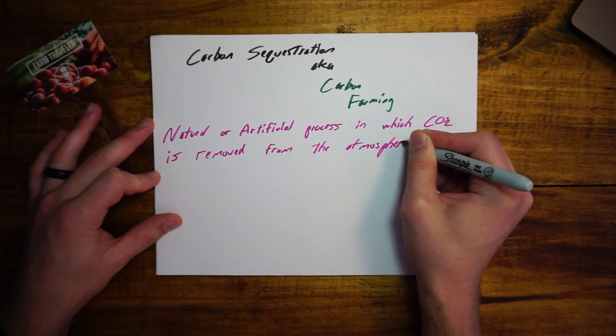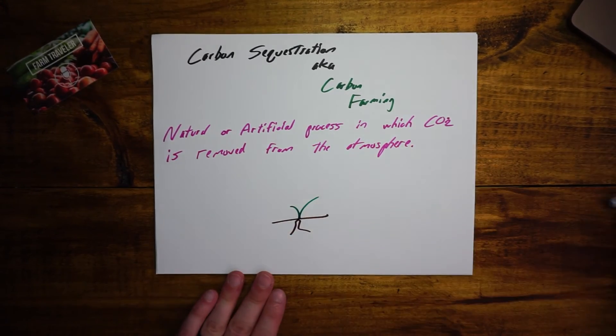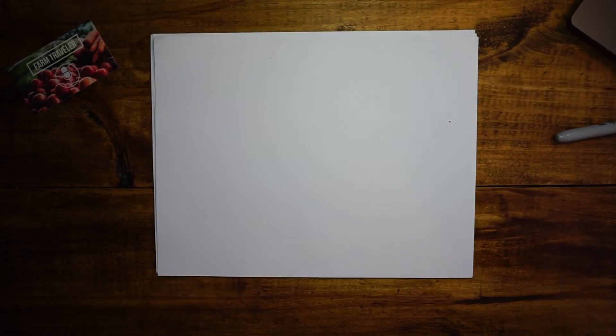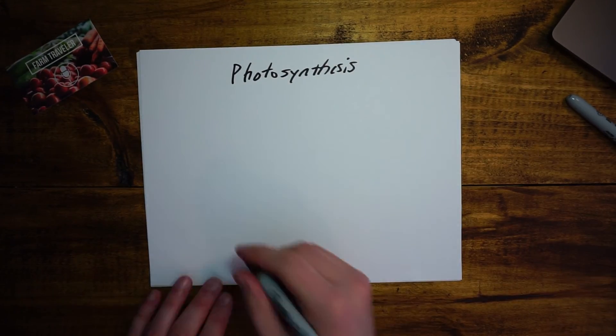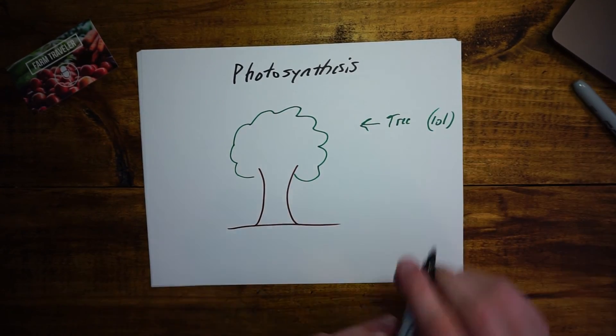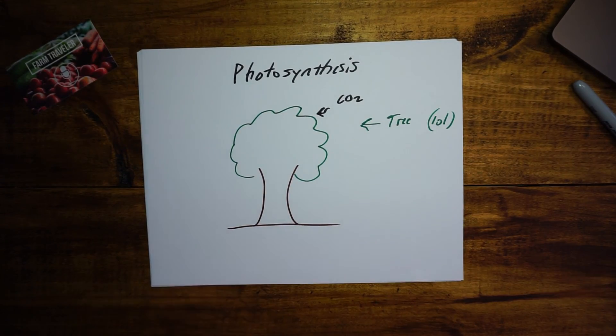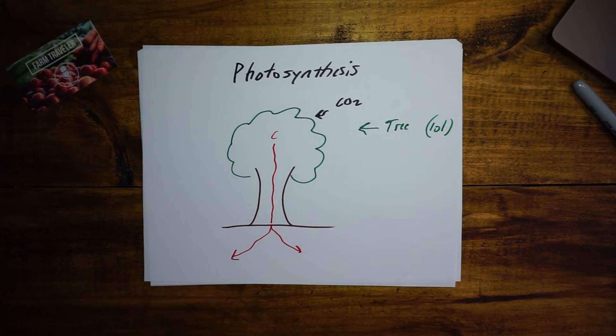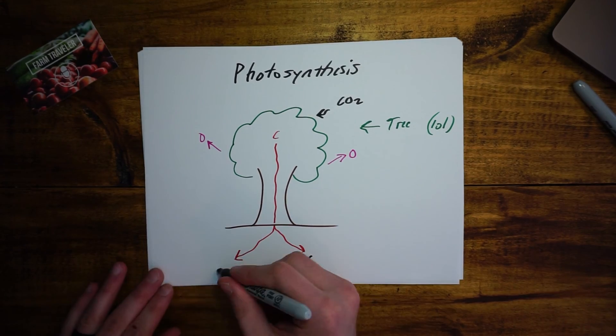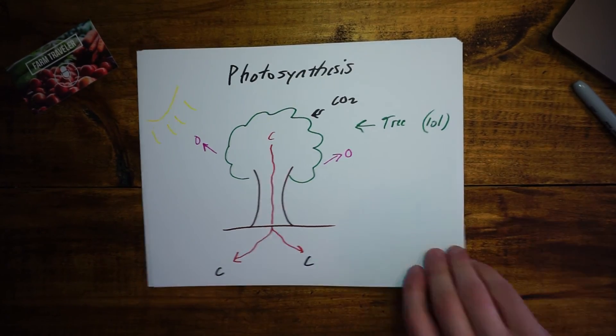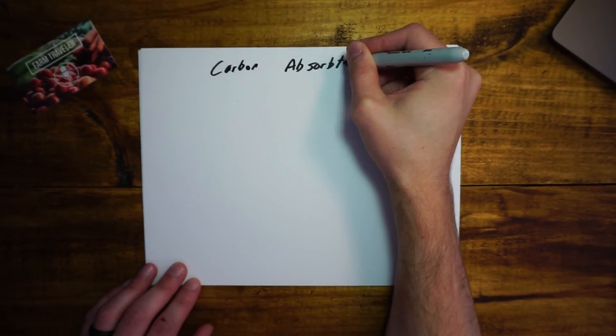Some experts in the agriculture space have referred to this practice as carbon farming. The main component in farming carbon is with plants, obviously. Carbon is important to plants in that it helps them during photosynthesis. During photosynthesis, plants use energy from the sun to create food from carbon dioxide and water. That energy is then used to make new leaves, roots, stems, and other plant parts. Once that plant dies, and if it remains in the soil, it will leave carbon for future plants to make use of.